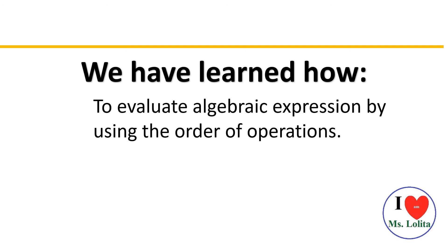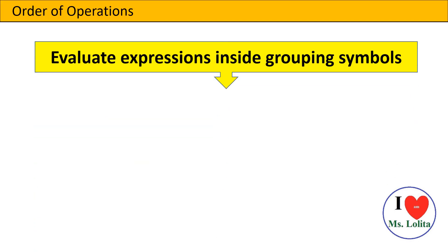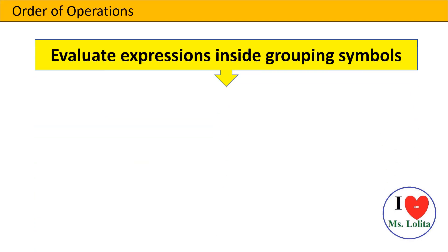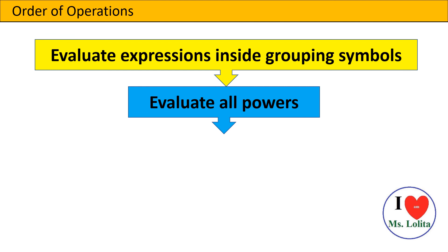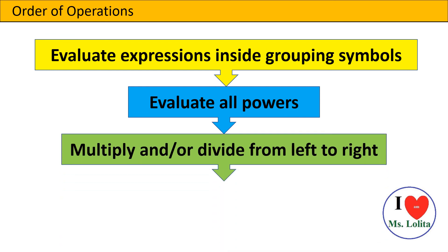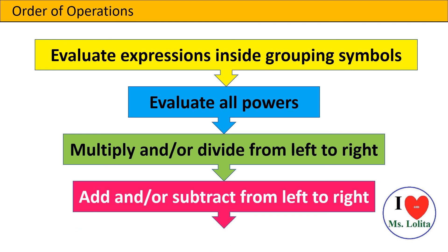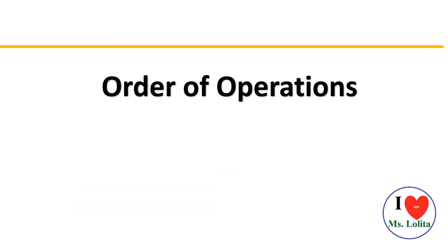Correspondingly, we have learned how to evaluate algebraic expressions by using the order of operations. Everything will be easy if you just remember the steps: first, evaluate expressions inside grouping symbols; next, evaluate all the powers; then multiply and or divide from left to right; and finally, add and or subtract from left to right. So long guys, see you again in the next math lesson!